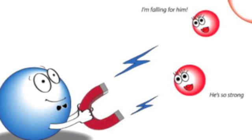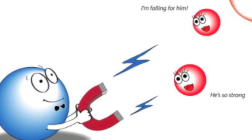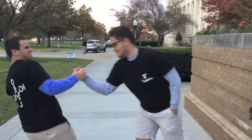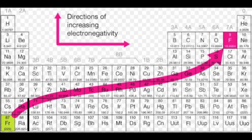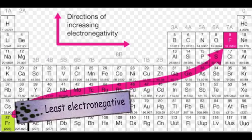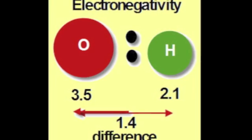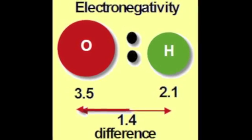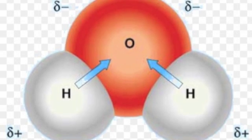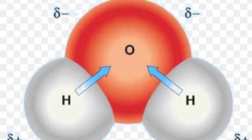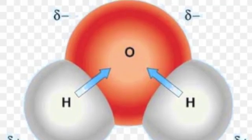Electronegativity is how well an atom can pull electrons toward itself. It follows a trend on the periodic table: the farther up and to the right you go, the more electronegative the atom. Oxygen is more electronegative than hydrogen, so hydrogen will have a partial positive charge and oxygen will have a partial negative charge.